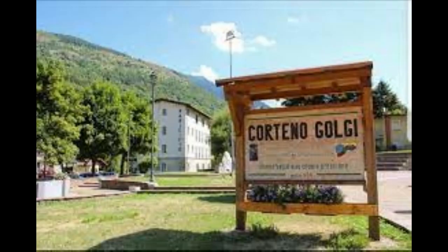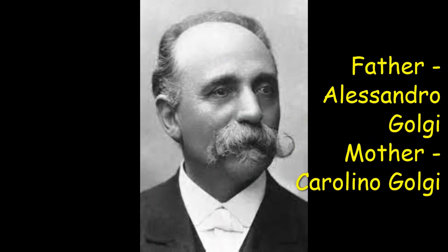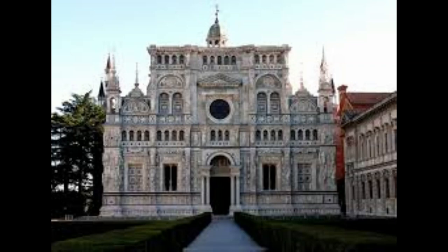Camillo Golgi was born on 7th July 1843 in the town of Italy which today is called Corteno Golgi in his honor. His father Alessandro Golgi was a physician and his mother Carolina Golgi was a supportive person in his life. He graduated from the University of Pavia after studying medicines and worked as a doctor for a couple of years before he started his new chapter as a pathologist.